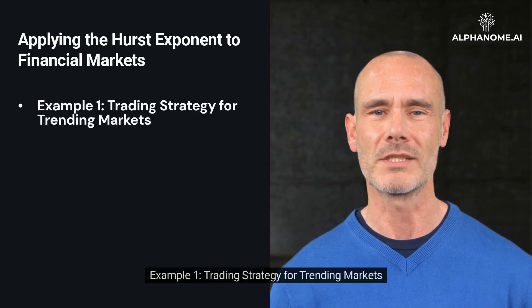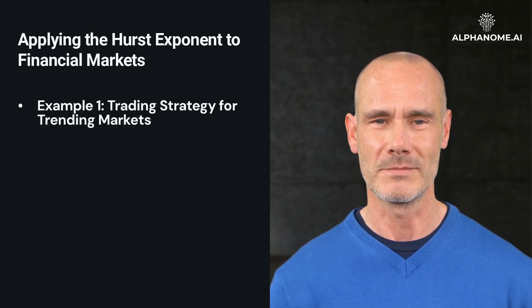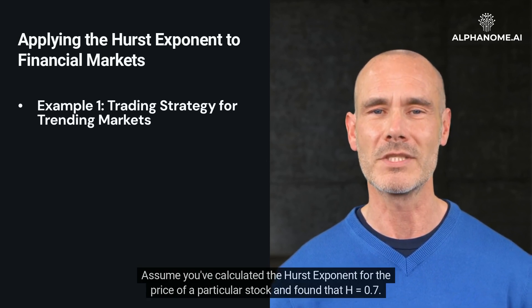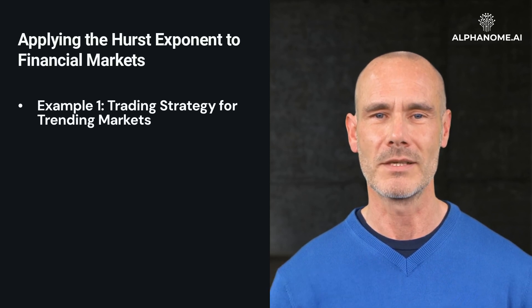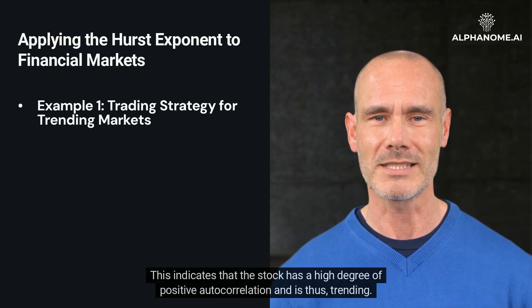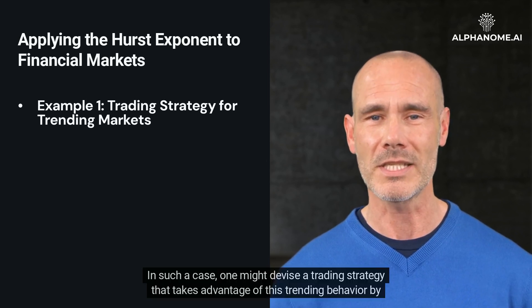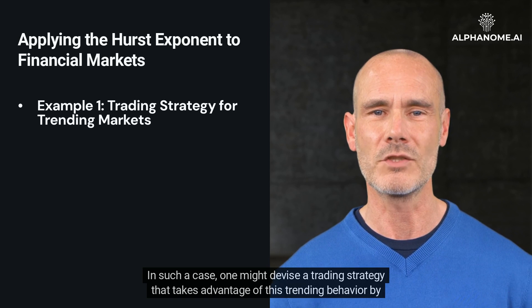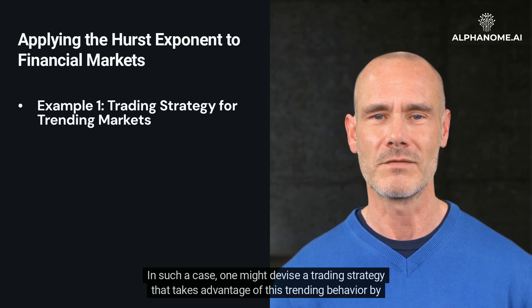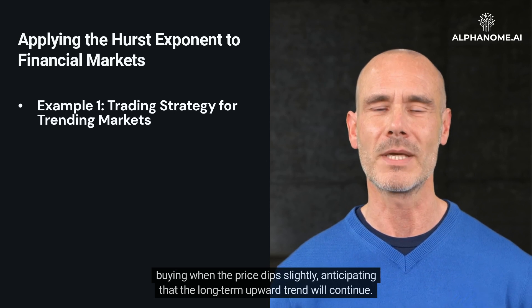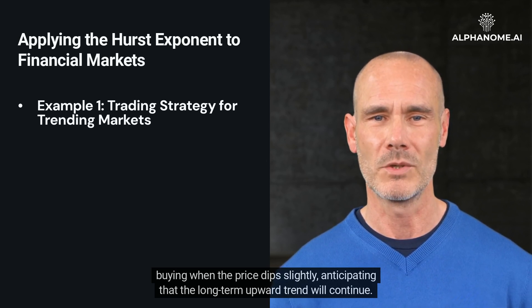Example 1 — Trading Strategy for Trending Markets: Assume you've calculated the Hurst Exponent for the price of a particular stock and found that H equals 0.7. This indicates that the stock has a high degree of positive autocorrelation and is thus trending. In such a case, one might devise a trading strategy that takes advantage of this trending behavior by buying when the price dips slightly, anticipating that the long-term upward trend will continue.